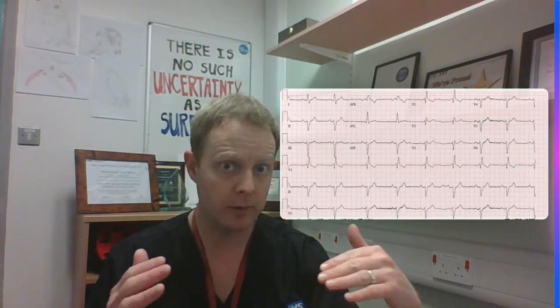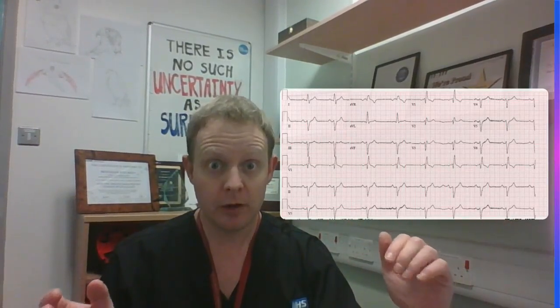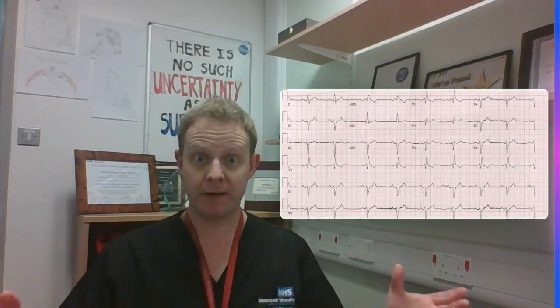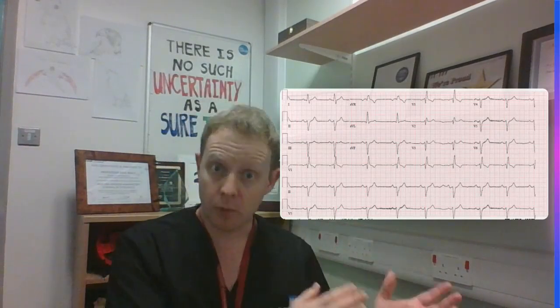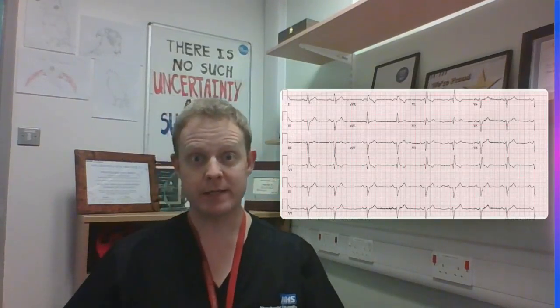So what's the axis? We look at lead one and see if the QRS complex is predominantly upwards — and it is. Then we look at lead two — it's predominantly downwards, so that means we've got left axis deviation. Right bundle branch block plus left axis deviation tells you you've got bifascicular block. There are three fascicles: the right bundle branch, the left anterior fascicle, and the left posterior fascicle. Block the right bundle branch and one fascicle on the left and you've got bifascicular block.